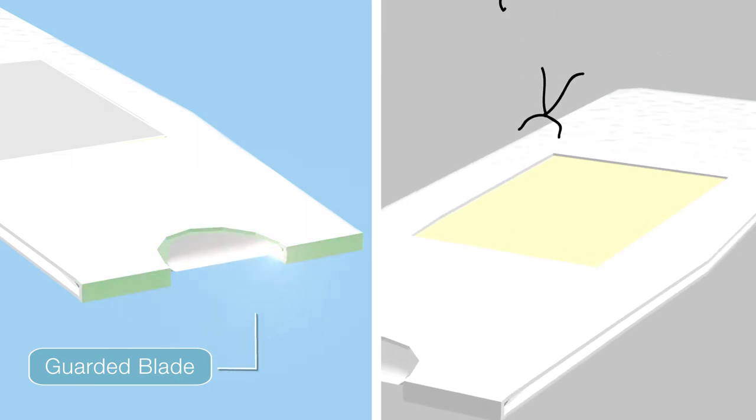The Suture-Out tool has two key parts: the guarded blade and the tacky surface.